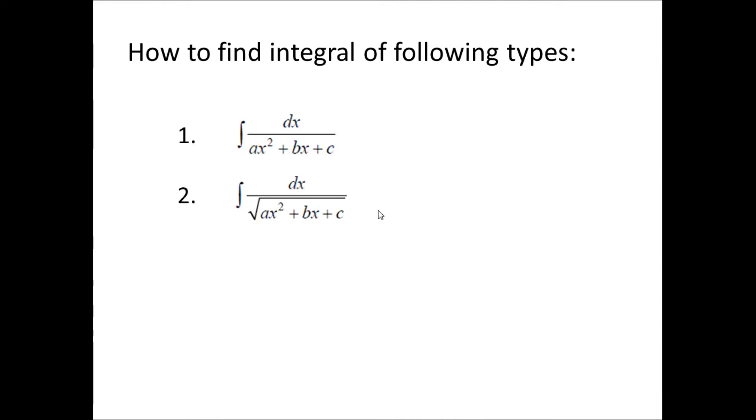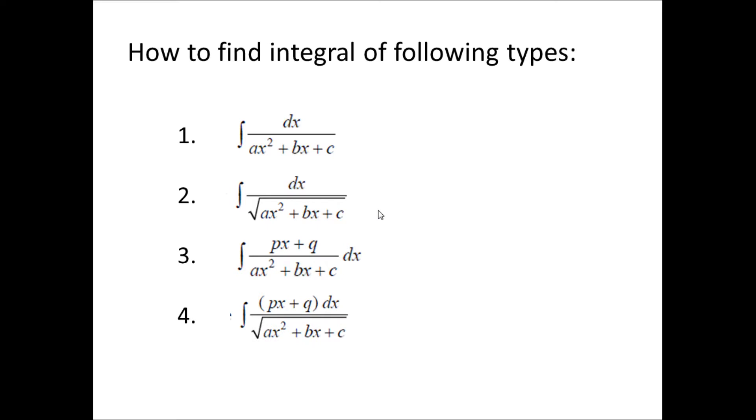The four types are: first, constant upon quadratic function; second, integral of constant upon square root of quadratic function; third, linear upon quadratic function; and fourth, linear upon square root of quadratic function. Let us start with the first two. There are certain common steps which we are going to follow in order to solve integrals of these two particular types.